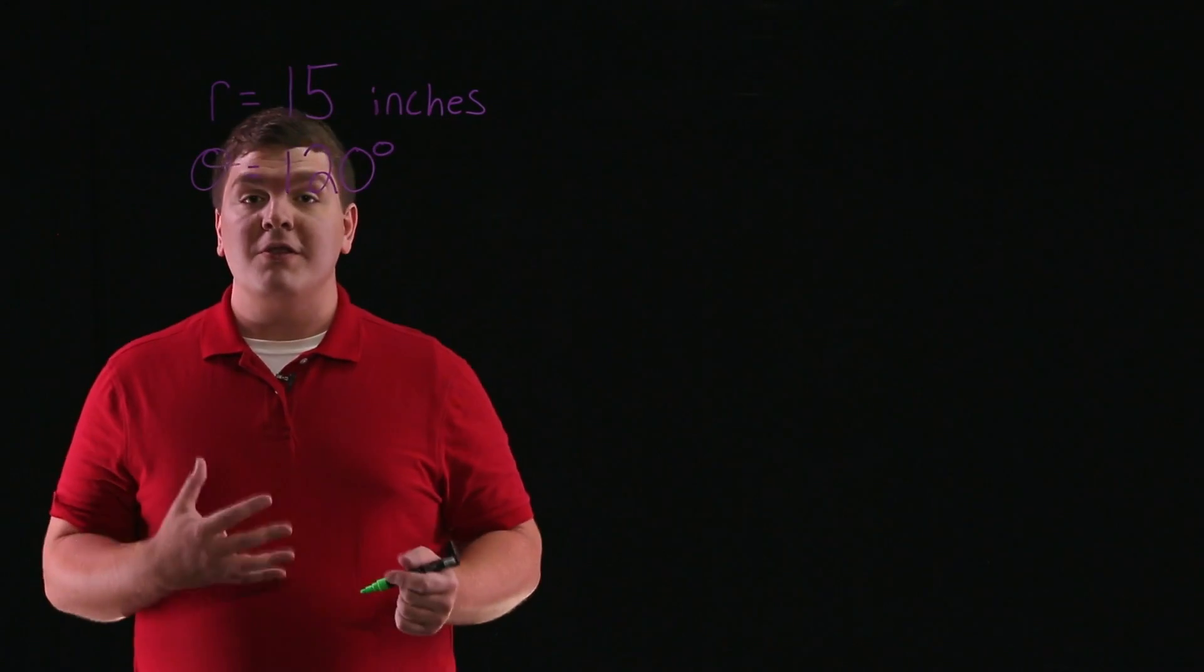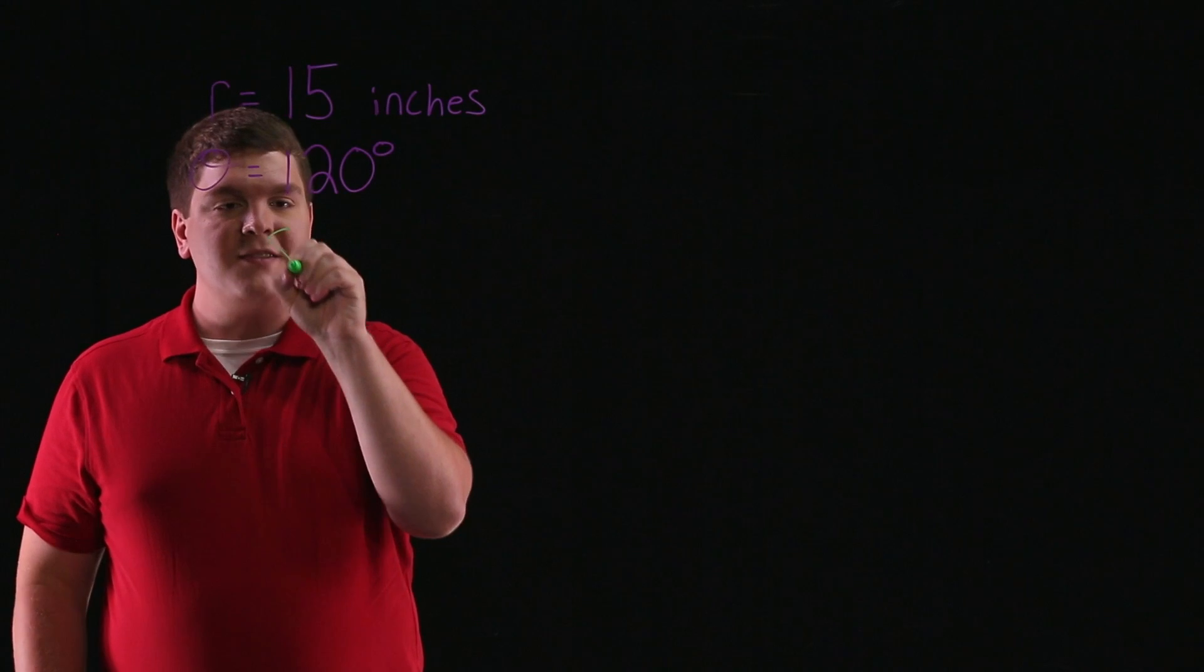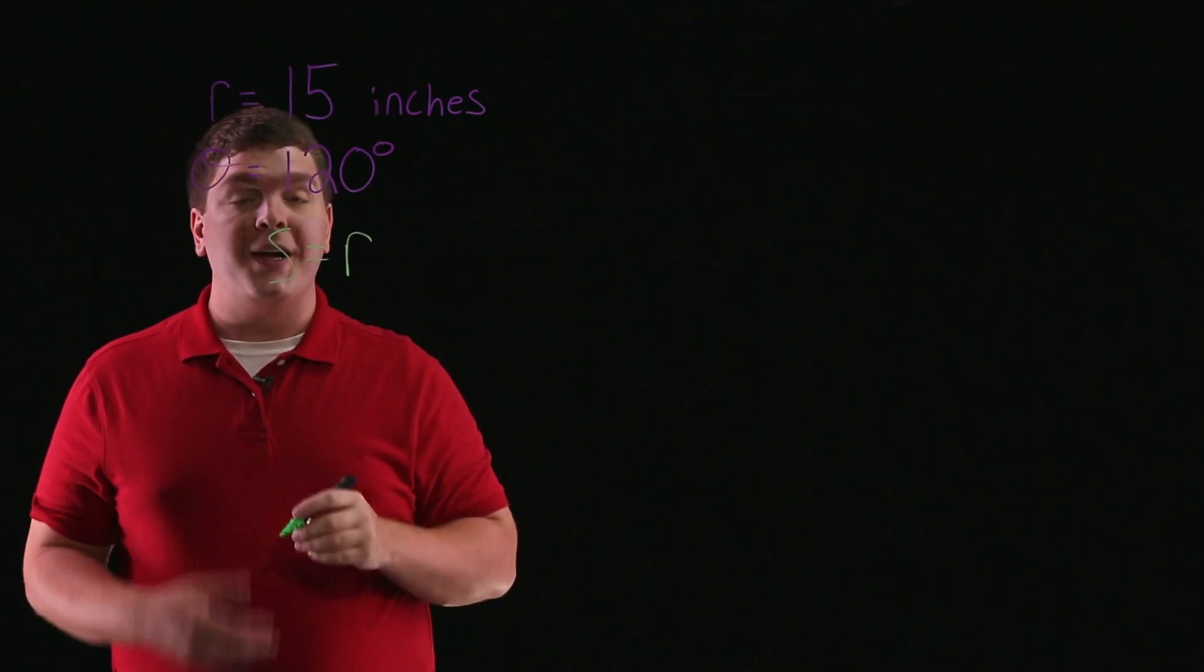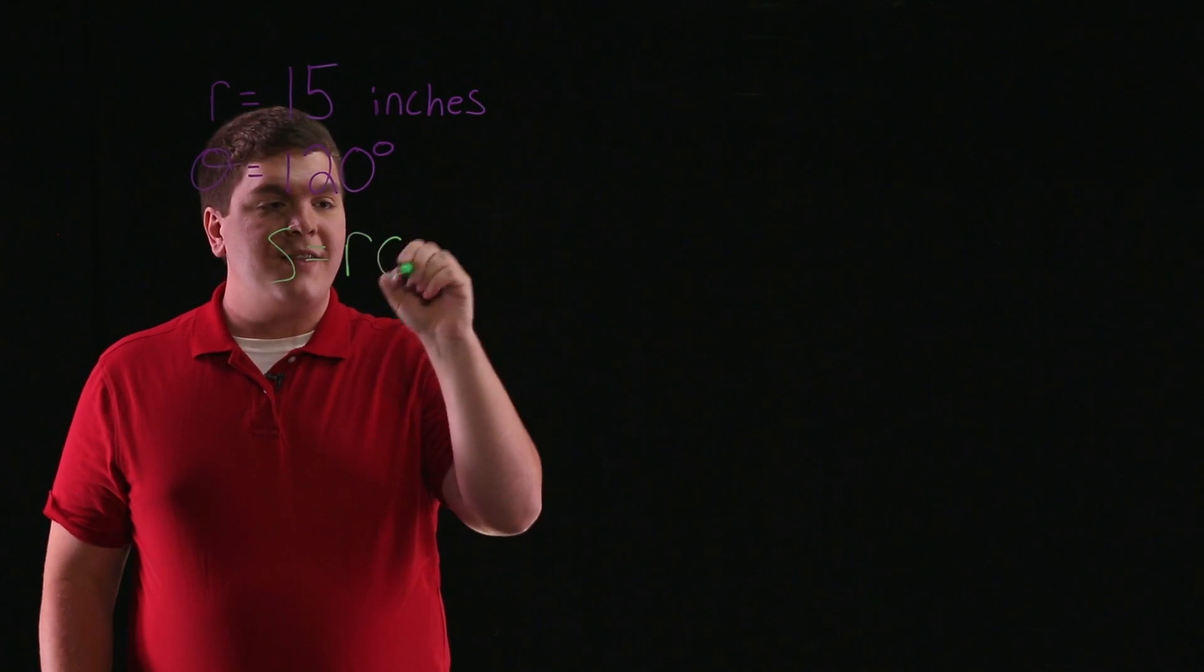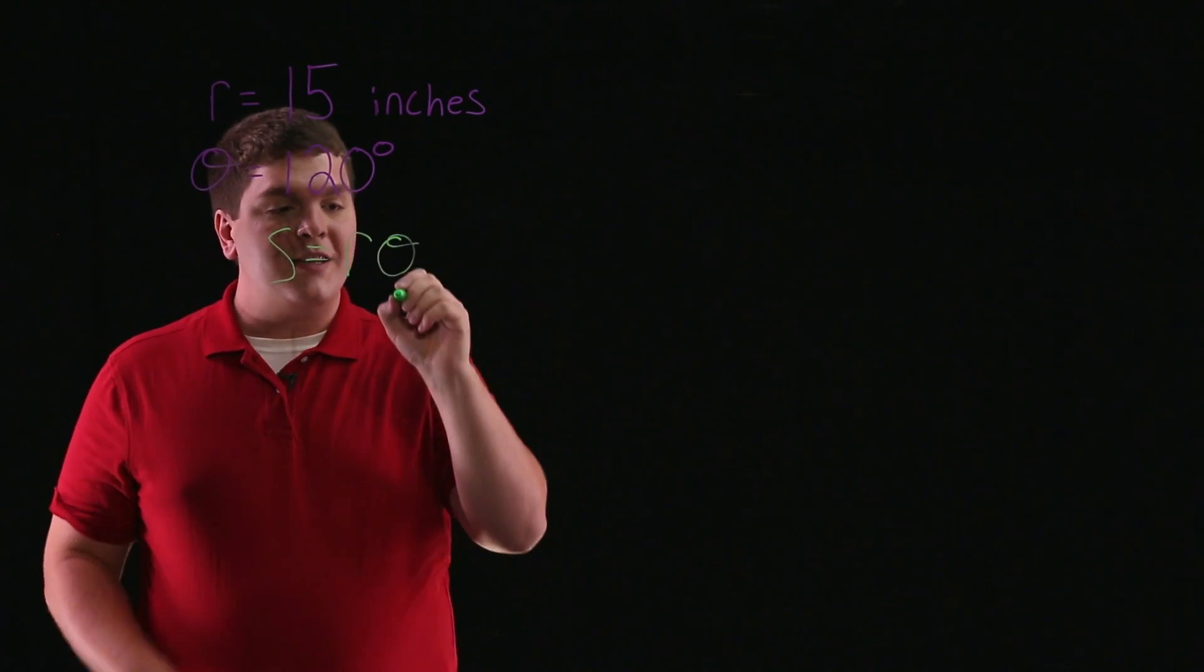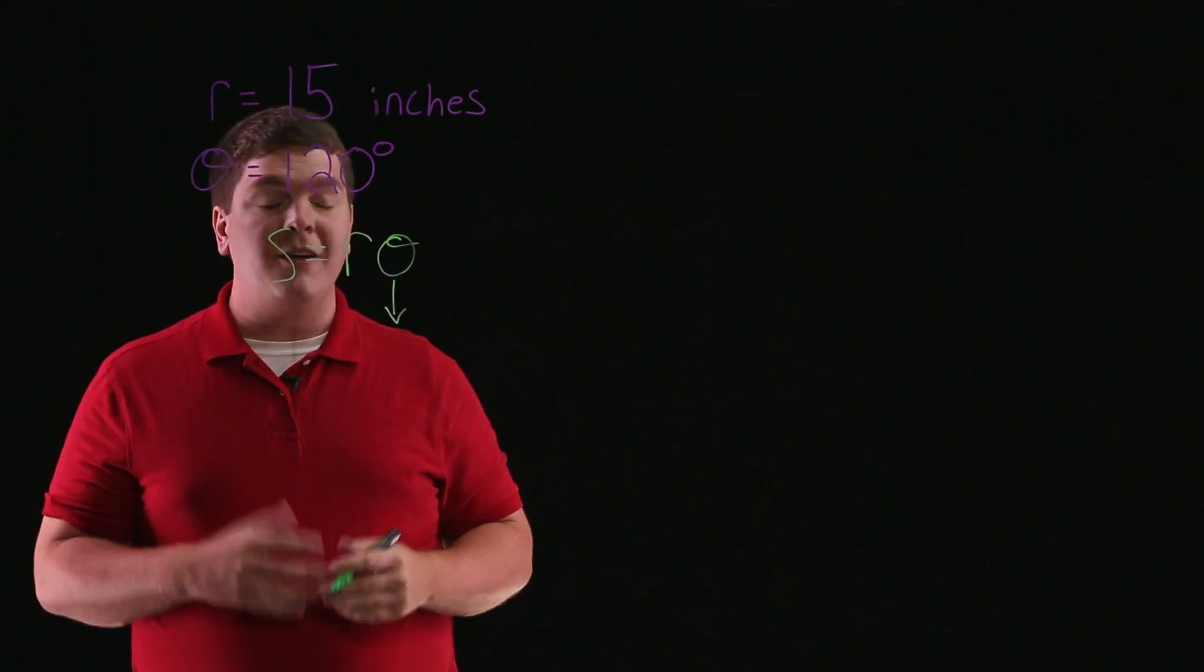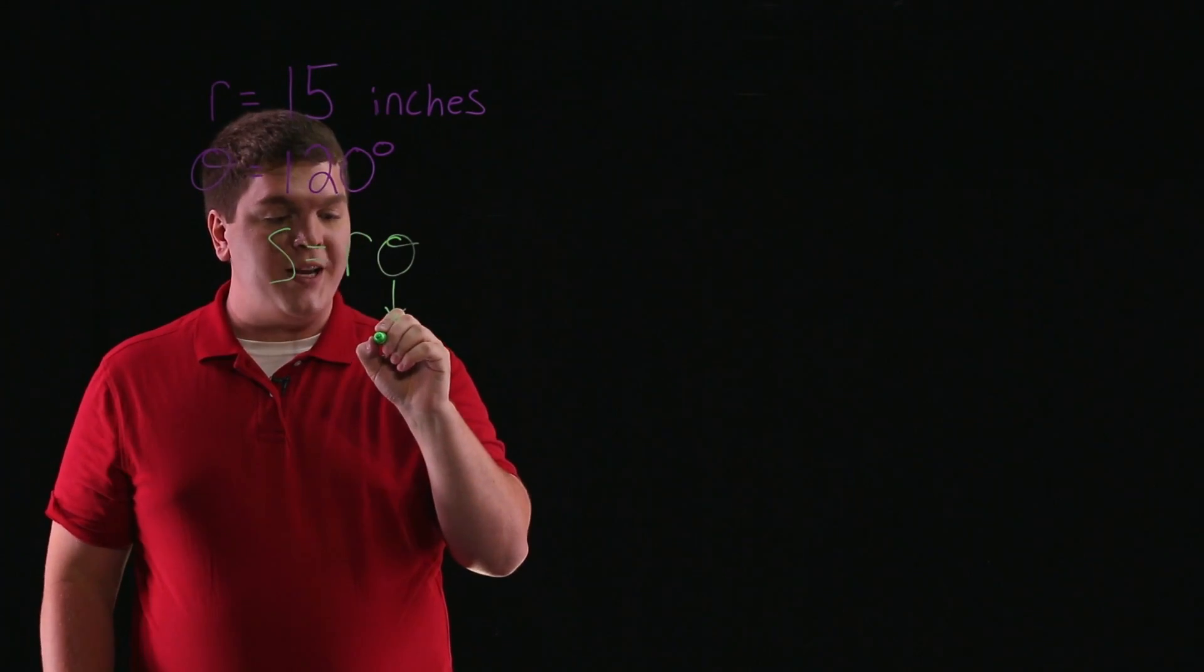Now the formula we want to use to find the arc length is S equals R, the radius of the circle, times theta, where theta is the angle. But we want to be careful because this angle theta has to be in radians.